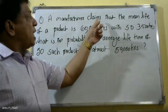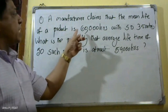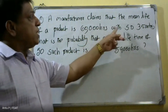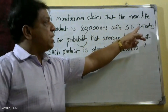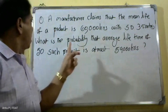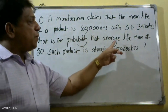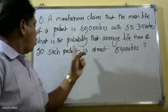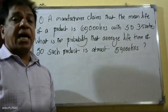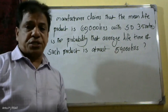A manufacturer claims that the mean life of a product is 60,000 hours with a standard deviation of 3,500 hours. What is the probability that the operating lifetime of 50 such products is at most 59,000 hours?